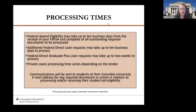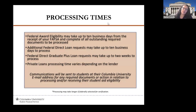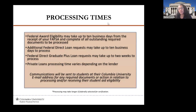A quick note on processing times and how important it is to file your FAFSA early — as soon as December 1st, 2024 when it becomes live — because the amount of time it takes for the university to receive your FAFSA and then provide you with a financial aid package can take up to 10 business days to two weeks depending on turnaround times. Communications are sent to your Columbia University email, so that's the email you want to make sure you're checking as much as possible to get any updates from the university.